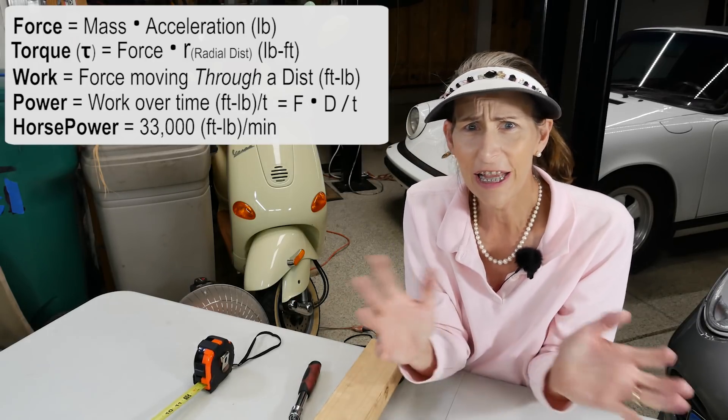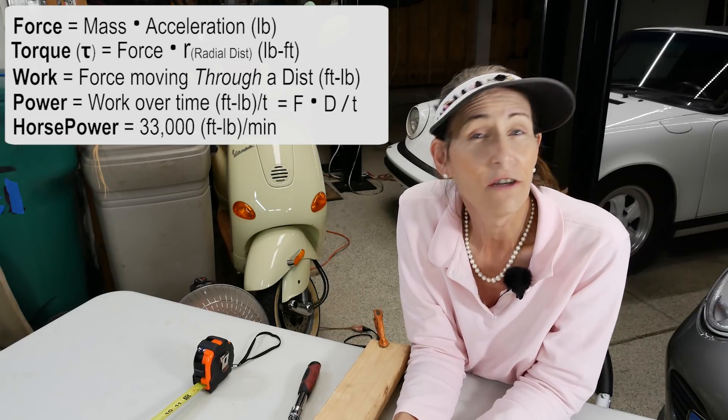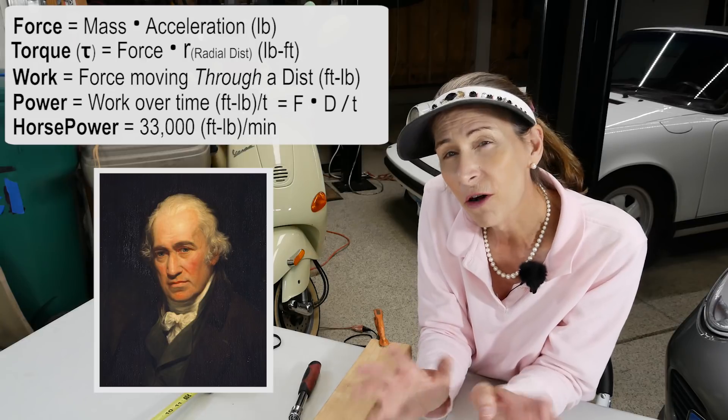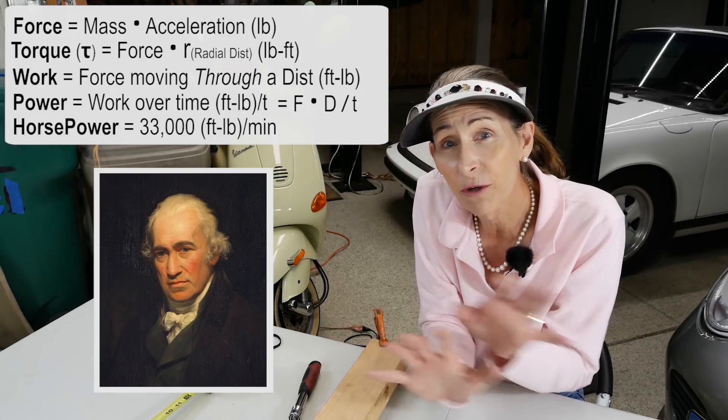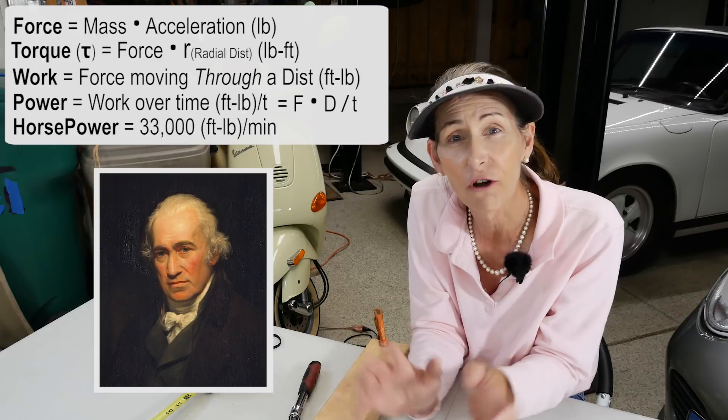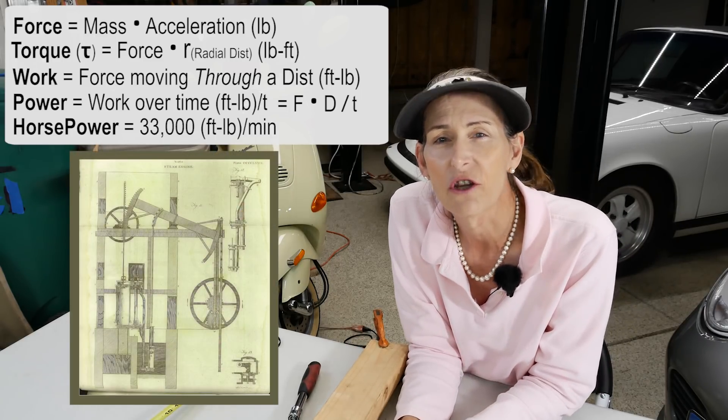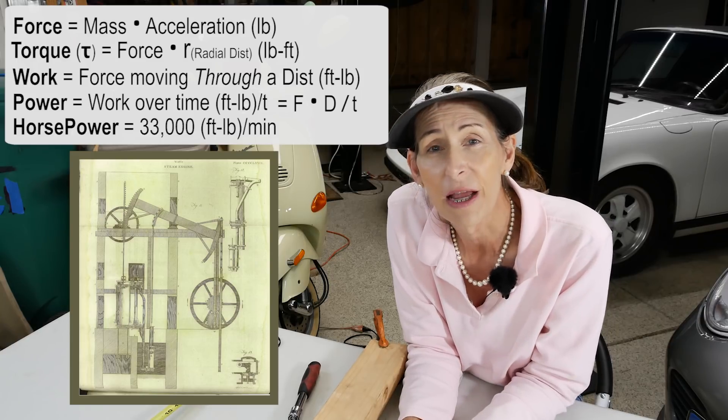So where did all this come from? Well there was a Scottish inventor by the name of James Watt and he's a contemporary of Mozart and Benjamin Franklin. So that kind of puts you in that time frame right around the early 1800s. And he developed a steam engine. Now Watt perfected a steam engine.